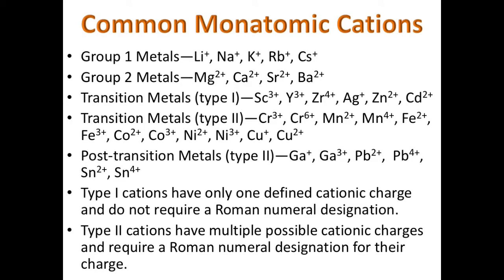The common monatomic cations are separated into two types. Type 1 cations have only one defined cationic charge and do not need a Roman numeral to designate what the charge is. For example, the Group 1 metals — sodium, lithium, potassium, rubidium, and cesium — all have a plus 1 charge. Group 2 metals have a 2+ charge: magnesium, calcium, strontium, and barium.